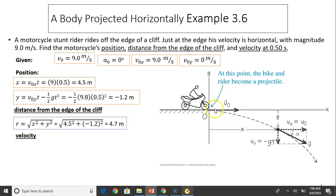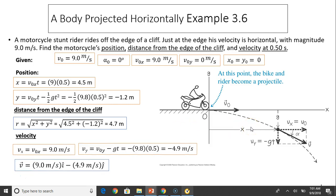The distance from the edge of the cliff, we can use Pythagorean theorem. This is the distance from 0 to this point at 0.5 seconds. For velocity: Vx equals V0x because Vx is constant. Vy equals V0y minus gt. Since ay equals negative g and V0y equals zero, Vy is negative 4.9 meters per second. It's negative because it's traveling downward.